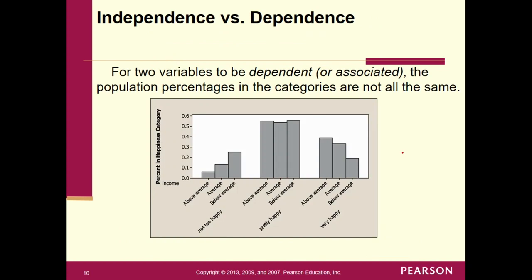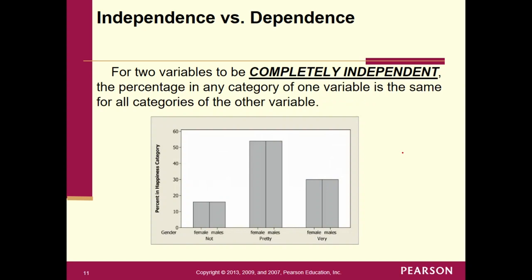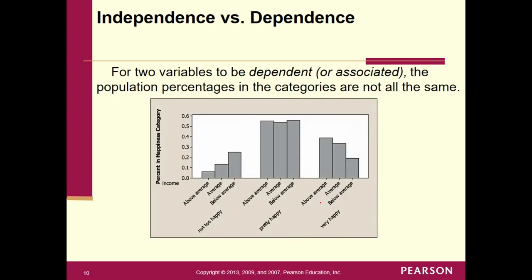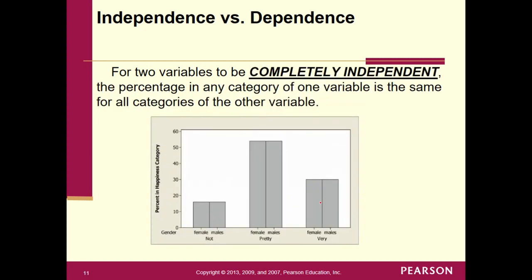For two variables to be dependent or associated, the population percentages in the categories are not all the same — there's a significant, pretty big difference. For two variables to be completely independent, the percentage in any category of one variable is the same for all categories of the other variable. So: differences mean dependent and associated; no differences mean completely independent.